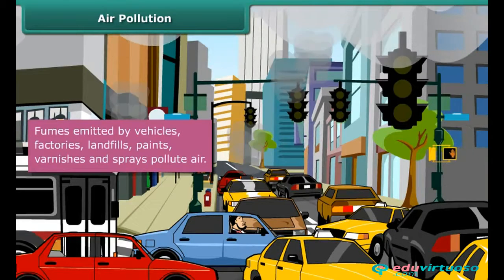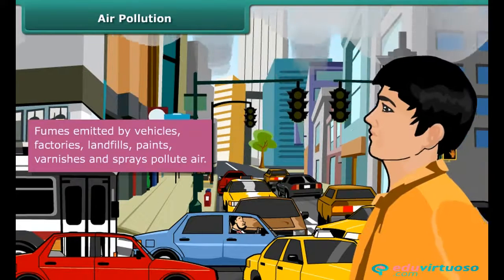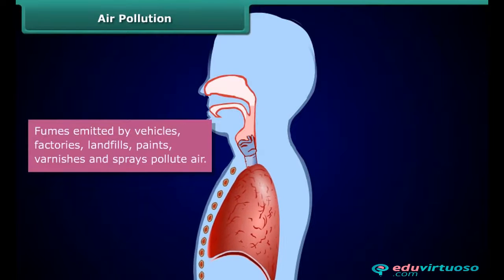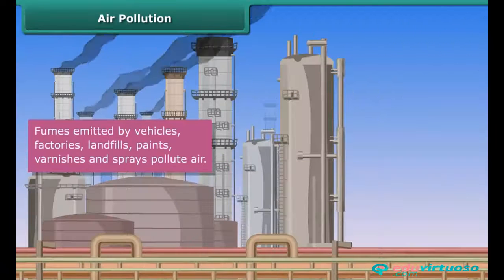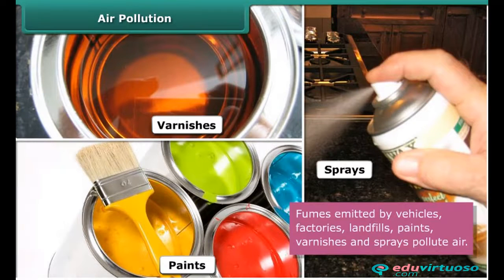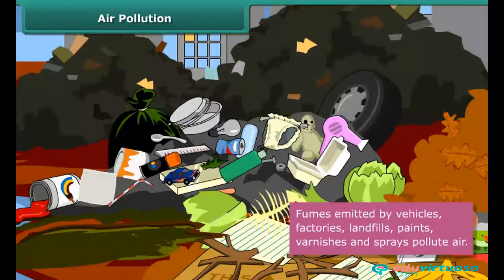The fumes emitted by vehicles pollute air. When inhaled, they irritate the windpipe and the lungs. Air is also polluted by the harmful chemicals emitted by factories. Paints, varnishes, and sprays contain chemicals that pollute air. Landfills where waste is deposited emit harmful gases that also pollute air.